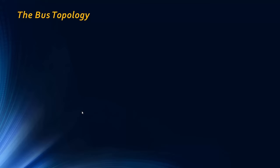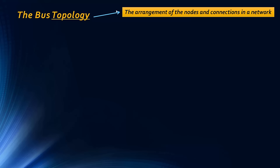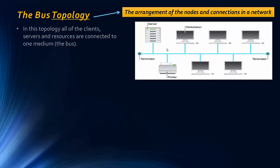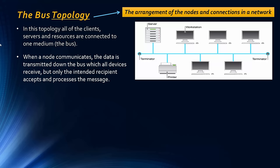The final classification of networks is in terms of their physical arrangement — how the nodes are arranged — called the topology. Topology means the arrangement of nodes and connections in the network. The first of four topologies is the bus topology, where all clients, servers, and resources such as printers are connected to one central medium called the bus. When a node sends data, it travels down the bus and is received by all devices, but only the intended recipient accepts and processes the message.